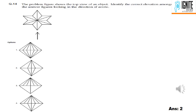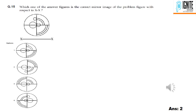Question 14: the top of the object gives the 3D shape. The correct front view has 4 sections, so option 2 is the right answer. Question 15: looking at the next step, you will find the right view. Option 2 is the right answer.